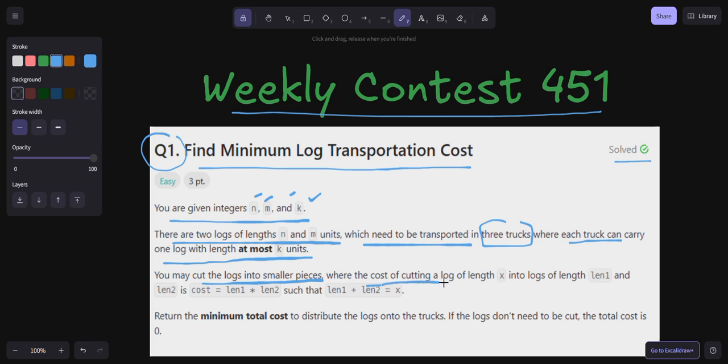The cost of cutting a log of length x into logs of length length1 and length2 is cost of length1 multiply with length2, such that length1 plus length2 is equal to x.